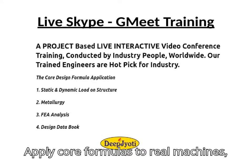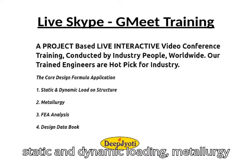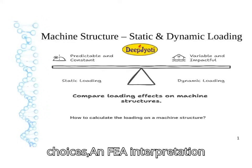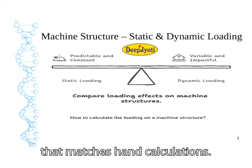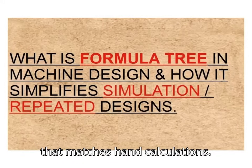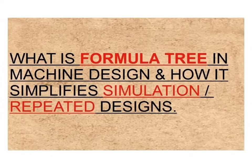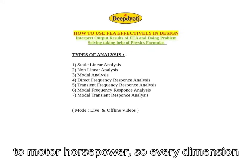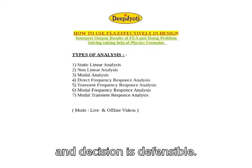Apply core formulas to real machines — static and dynamic loading, metallurgy choices, and FEA interpretation that matches hand calculations. Build a formula tree from initial loads to motor horsepower, so every dimension and decision is defensible.